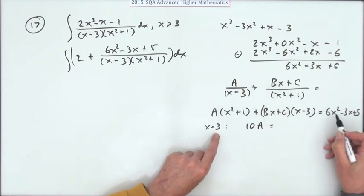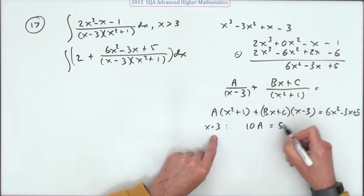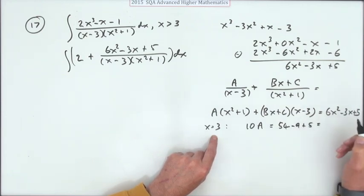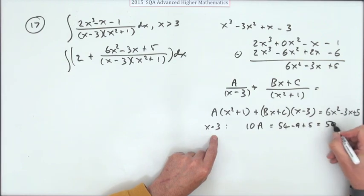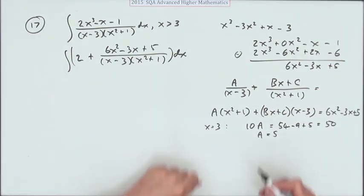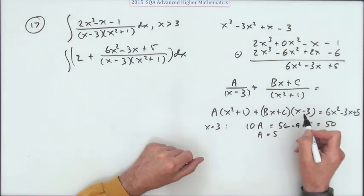I've got to go through all this, so I've got 9 times 6, that's 54, that'll be minus 9 plus 5. So that very handily is 50, which means that A equals 5.